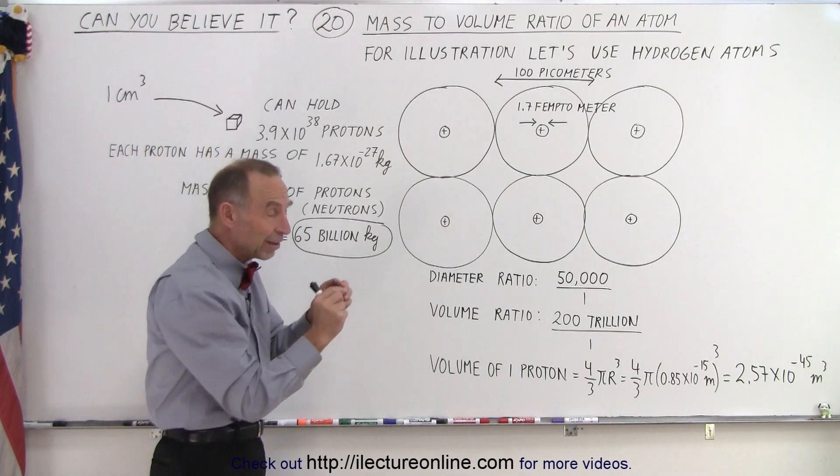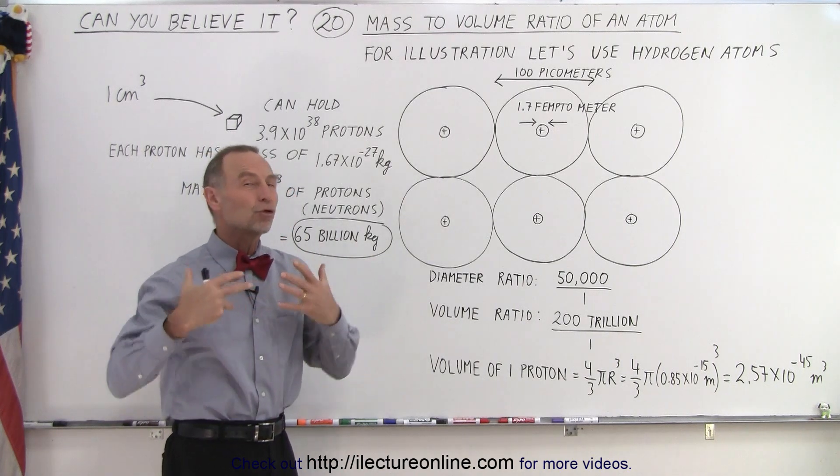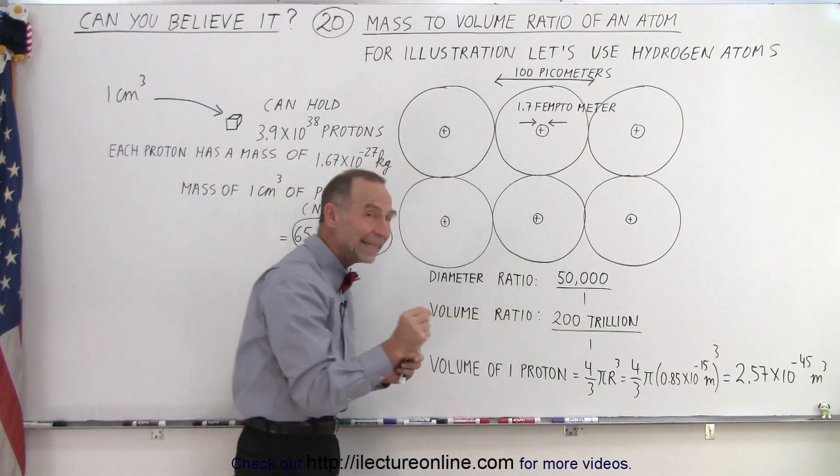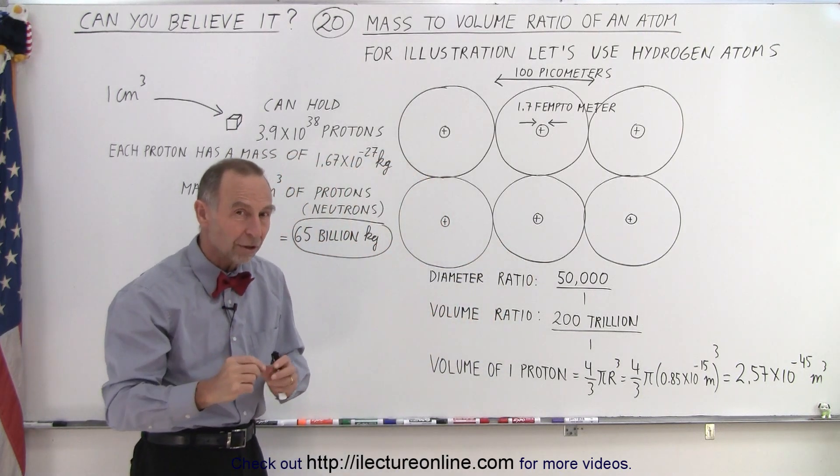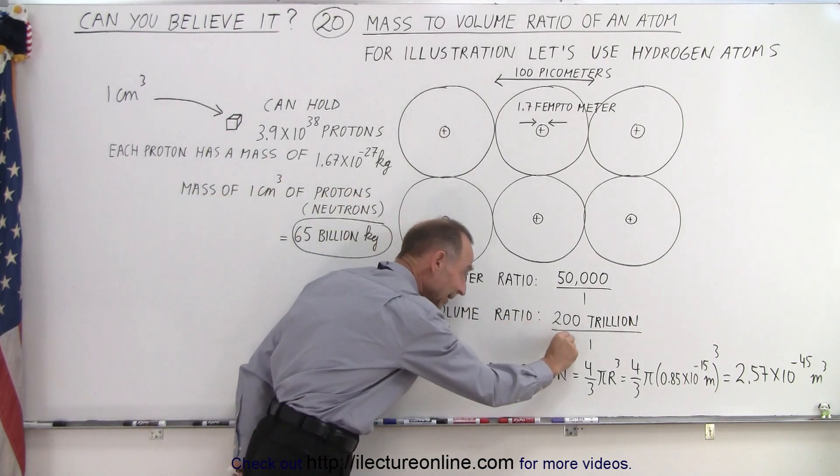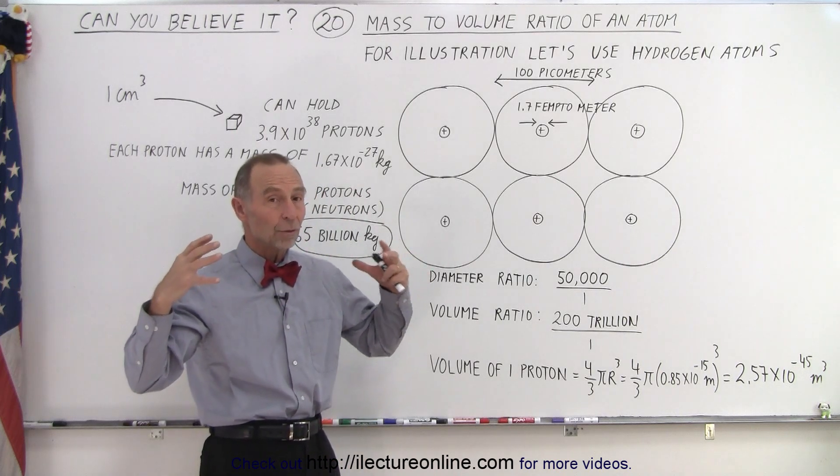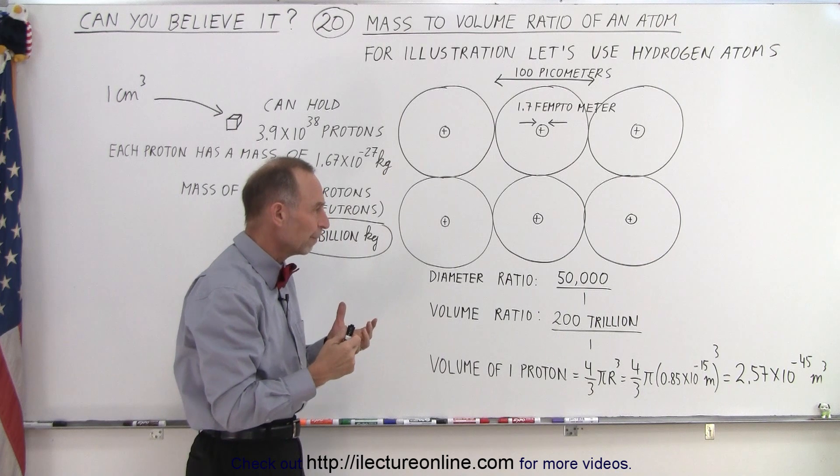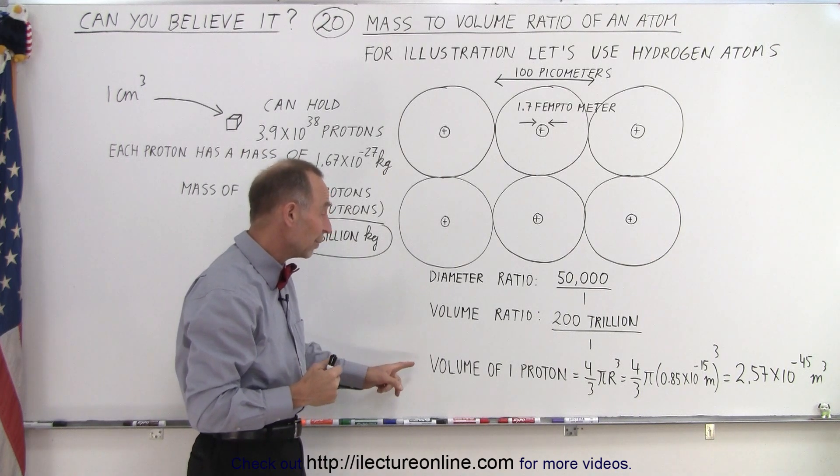And then what's surprising is that the nucleus has the vast majority of the mass. The mass of the nucleus is more than 99.9% the mass of the entire atom. So it takes up a tiny fraction of volume but has almost all of the mass, and that's the interesting part of the structure.